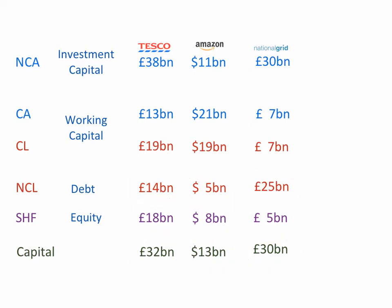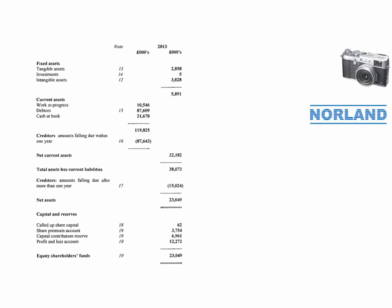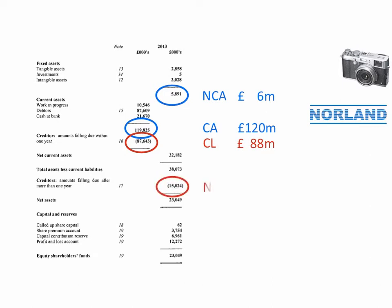Now let's look at another company, Norland Managed Services. This is a UK company who provide managed building services — i.e. they look after the running of office blocks, employing security staff, receptionists, cleaners, and maintaining the fabric of the building. Norland has non-current assets of £6 million, current assets of £120 million, current liabilities of £88 million, and non-current liabilities of £15 million, leaving net assets of £23 million, which is equal to the shareholders' funds of £23 million.